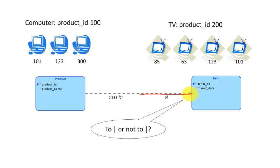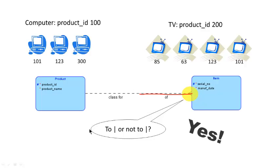How do you uniquely identify an item? Can you identify it just by its serial number? No — the same serial number occurs in multiple products. For example, there is a computer with serial number 101 and also a TV with serial number 101. There is a TV with serial number 123 and also a computer with serial number 123. So the serial number by itself does not uniquely identify an item. But when you say 'computer with serial number 101,' then we know which item we mean. Therefore, the combination of product ID and serial number is what uniquely identifies a particular item, and we do need key migration notation here.